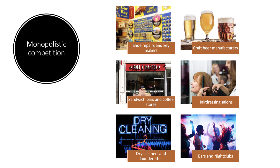Monopolistic competition is a favorite exam question because there are so many different examples of industries where this happens — from shoe repairs to craft beer making, from hairdressing salons to dry cleaning companies, sandwich bars, nightclubs, and pubs. There's actually quite often a gray area between monopolistic competition, where you have many firms each with a relatively small market share, and oligopoly, where it's dominated by a few big suppliers. Look for that subtle difference based on the data you might get in a data response question.